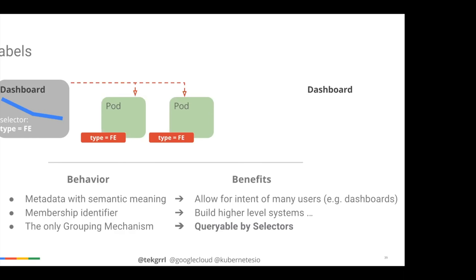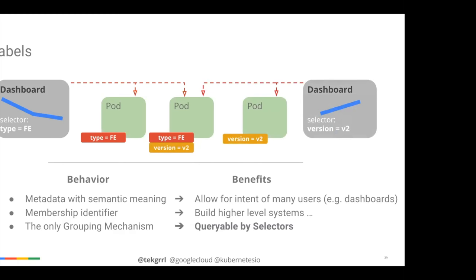With labels, you can group pods together. For example, you could label pods with 'type=fe' to indicate front-end pods, then make API calls to Kubernetes to retrieve all pods with that label. Pods can have multiple labels — for example, 'type=fe' and 'version=v2' — and labels are queryable by selectors via the API. This becomes very powerful when looking at canary deployments, which we'll cover shortly.